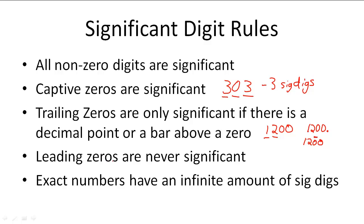Leading zeros are never significant. So if I have a number like 0.0023, I only have two significant digits — 2 and 3 are significant. But the leading zeros that come before the significant digits are not counted as significant.